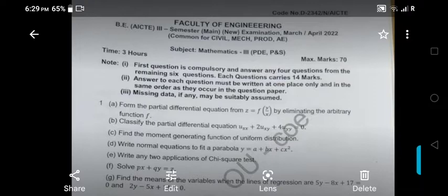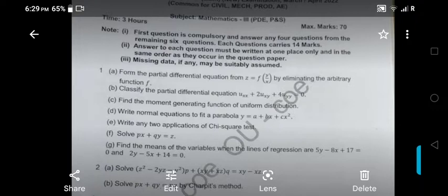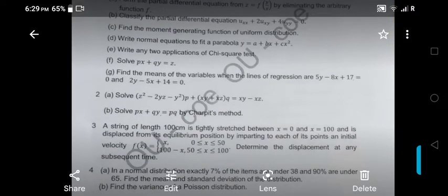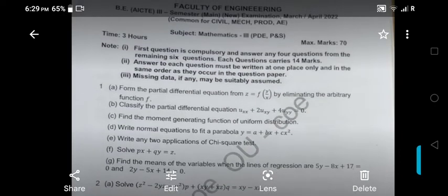So this is the latest question paper pattern. Earlier we used to get 10 into 2. Now he gave 7 into 2, 14 marks. Short answers, in this 7 short answers we have to write. Each one is 2 marks. And long answers he gave 6 questions. Out of 6 we have to write 4 questions. 14 into 4, 56. Correct? So now see the question paper how it came.